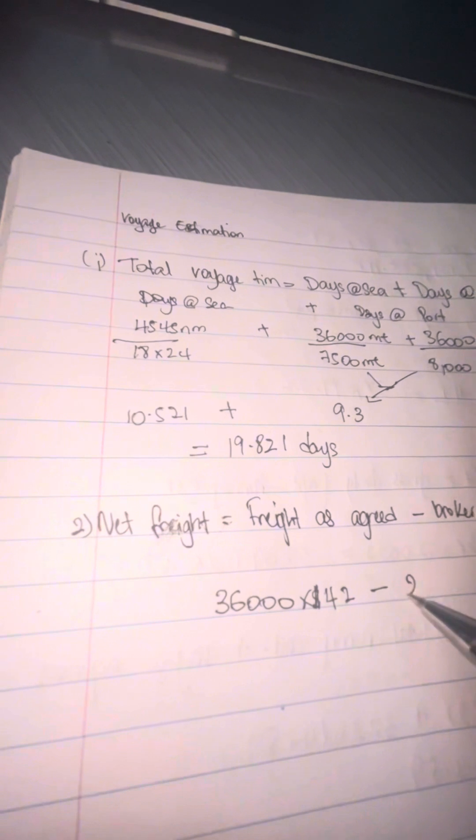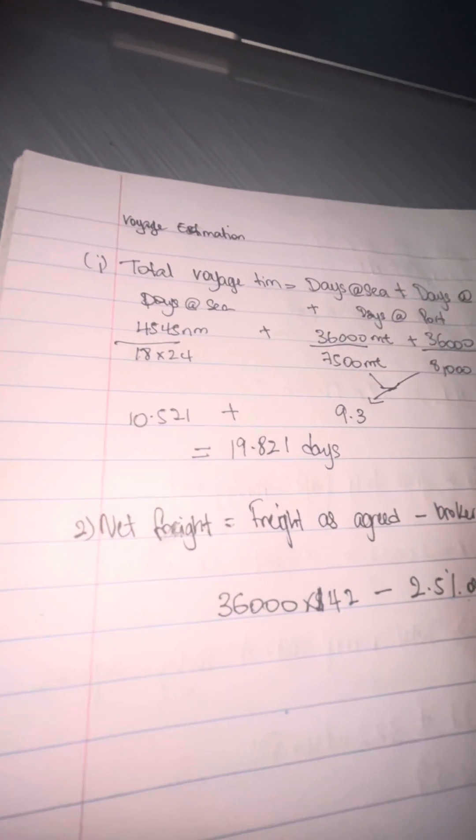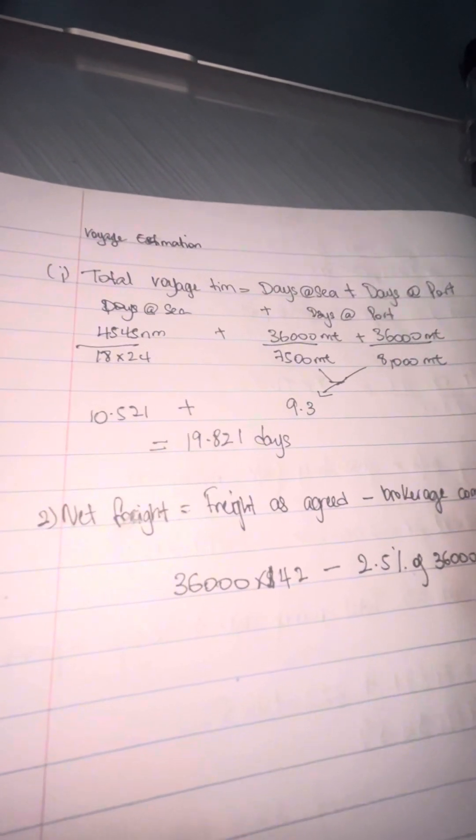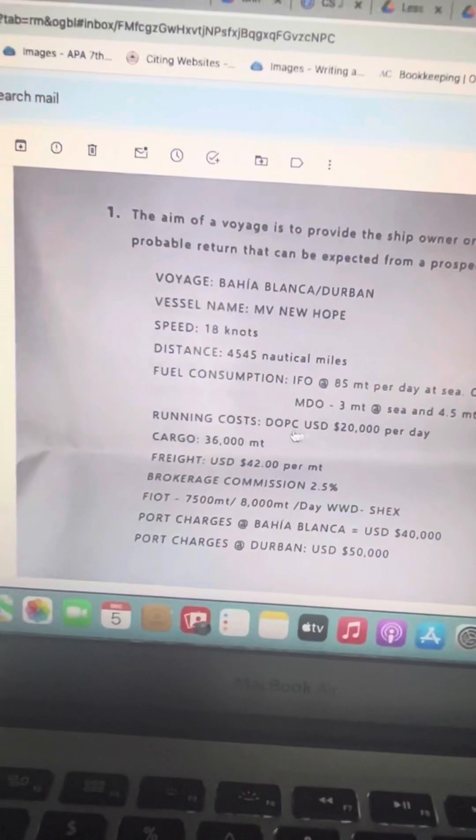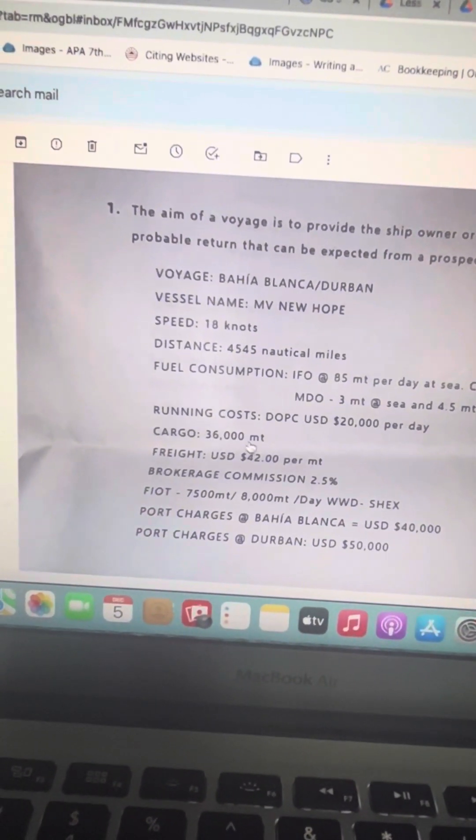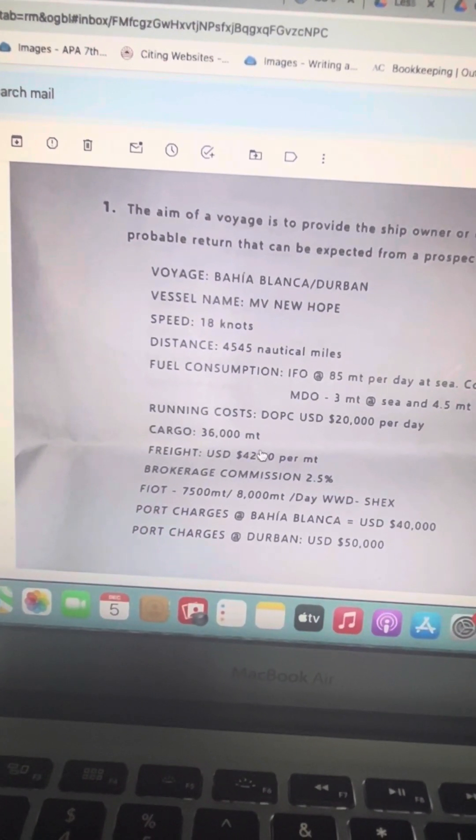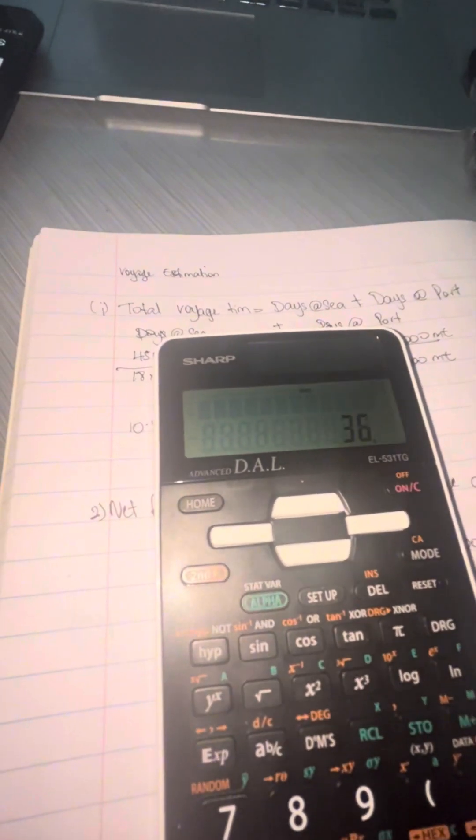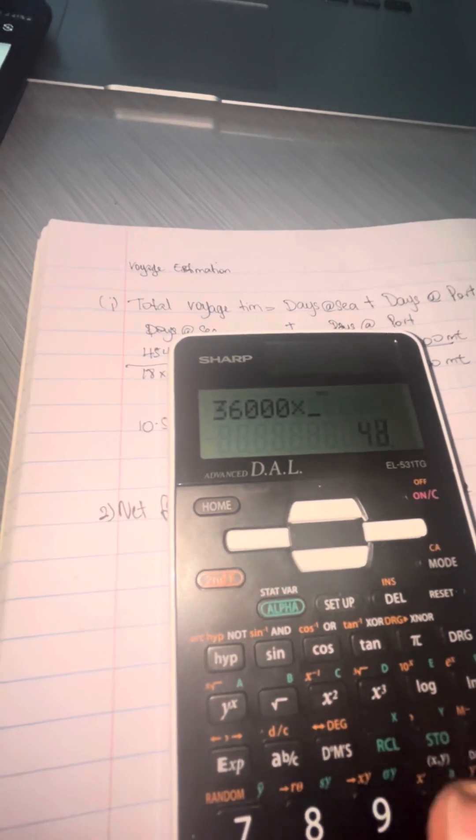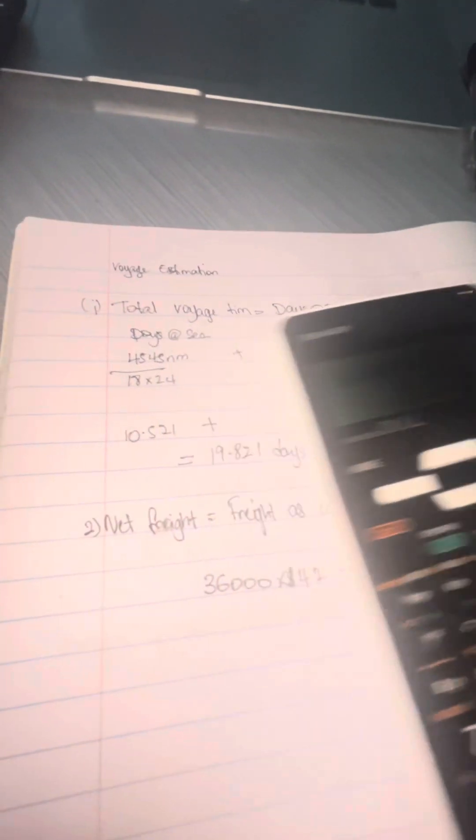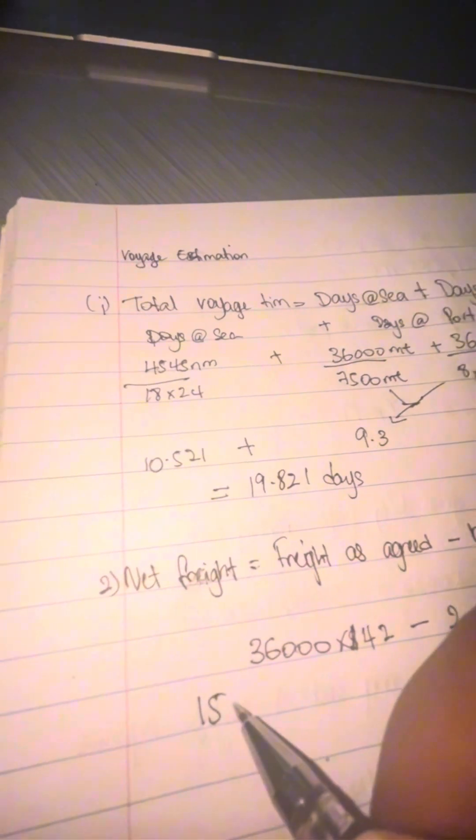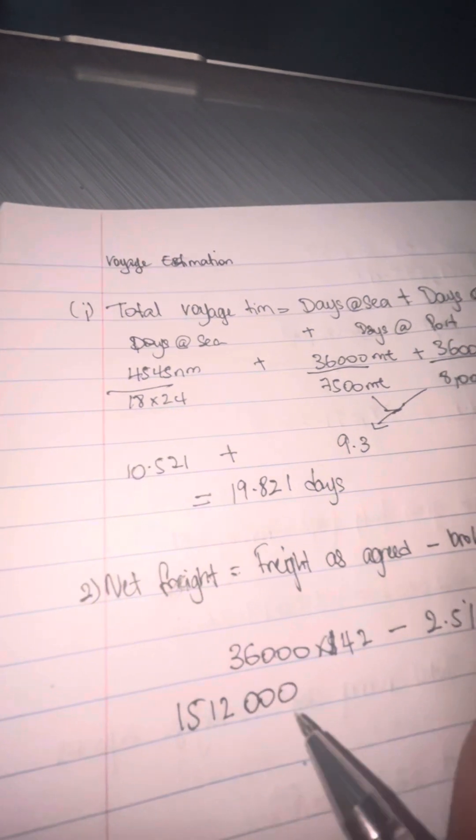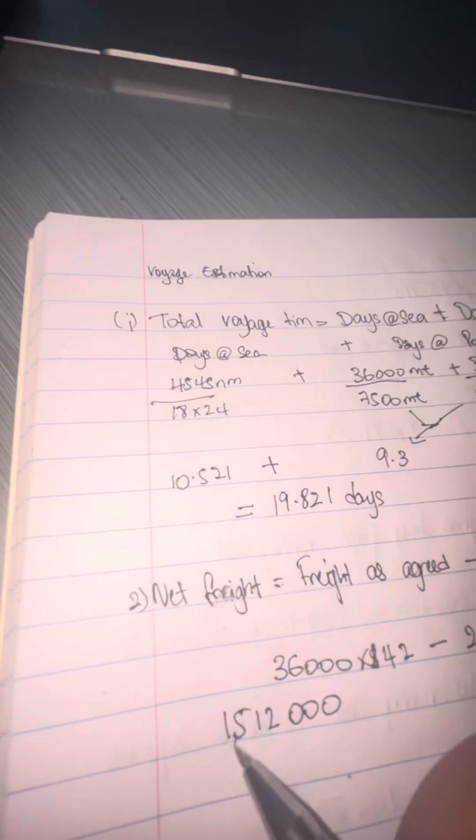The 36,000 is the amount of cargo you're loading or unloading, and the 42 is the freight that was agreed per metric ton. Here I'm showing you on the question paper again. The brokerage commission is 2.5% of whatever figure is the 36,000 metric tons times the 42 dollars.